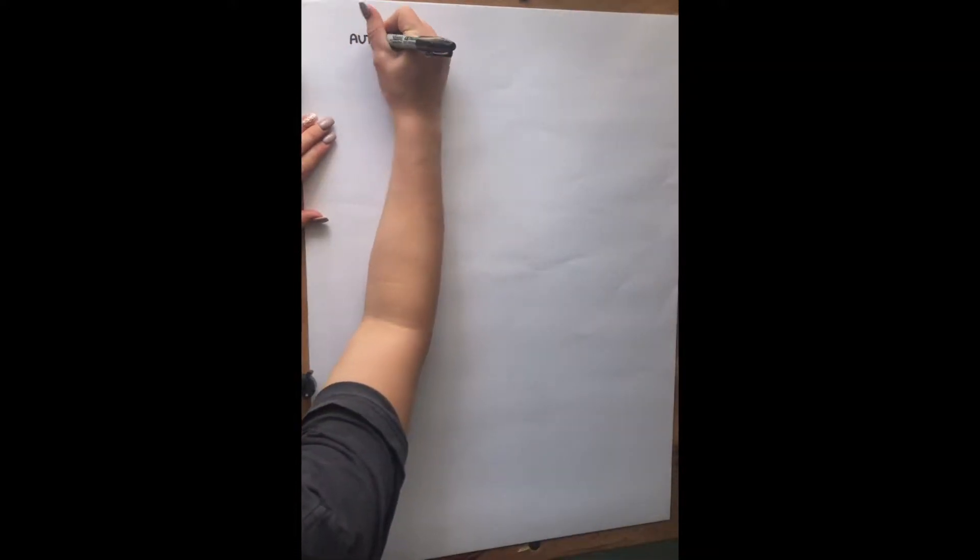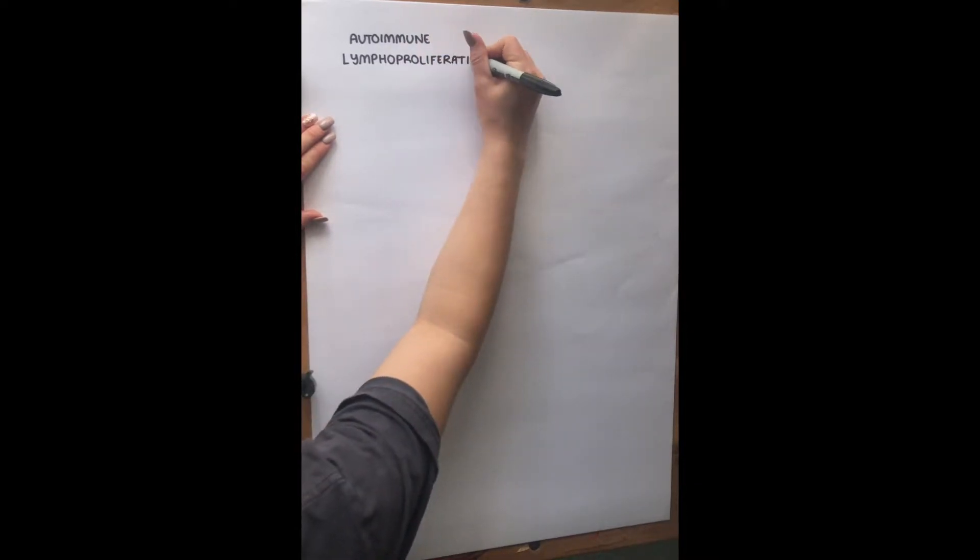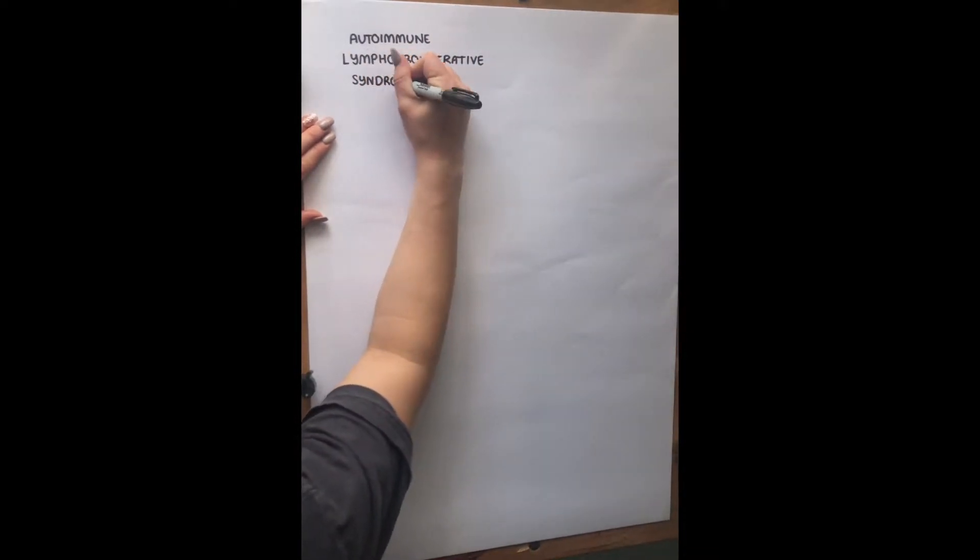So firstly, I'm just going to break down the name autoimmune lymphoproliferative syndrome. It's also known as ALPS, so that's an easier way to remember it and it is a quite hard name to say.